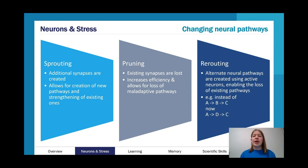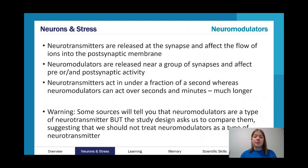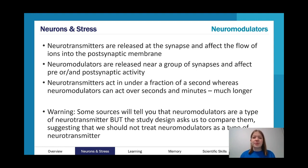We also have rerouting, where alternative neural pathways are created using active neurons, enabling the loss of existing pathways — so instead of going from A to C via B, you can now go there using D. Neuromodulators are new to the study design. Neurotransmitters are released at the synapse and affect ion flow into the postsynaptic membrane, whereas neuromodulators are released near a group of synapses and affect pre- and/or post-synaptic activity. Neurotransmitters act over a very short time frame, whereas neuromodulators can act over seconds and minutes.